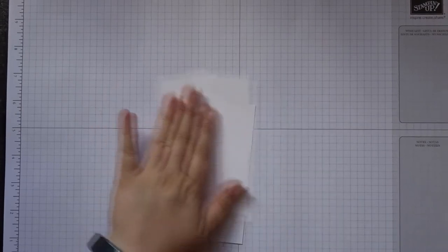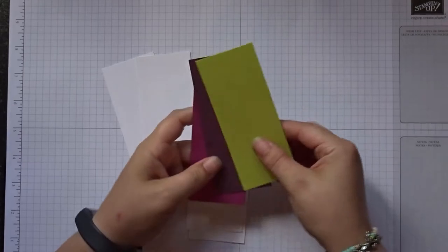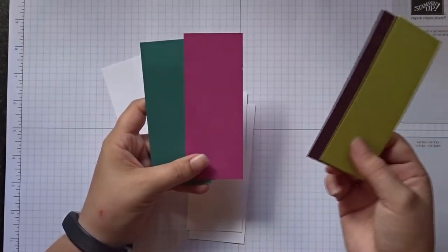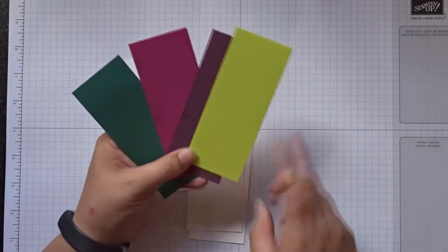What you will need is some Whisper White cardstock cut to two inches by five inches and some of the rest of the ink colors: Lemon Lime Twist, Fresh Fig, Berry Burst, and Tranquil Tide, and they are again two inches by five inches.